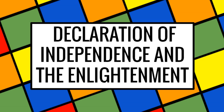It also lays out the case against Great Britain and King George III. It argues that King George III has not protected the rights of the colonists, and that Parliament was passing laws without their consent. These are the major grievances, or reasons, for independence listed in the document.